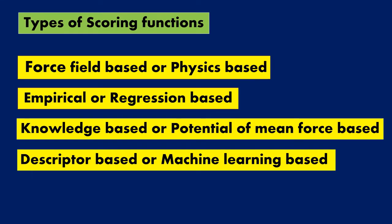Now coming to the different types of scoring functions. Generally in literature, we see that there are only three different types of scoring functions mentioned. But in the paper which I have read, an additional scoring function is also mentioned. So I have taken four different types based on that reference material: the first is force field based or physics based method; second, empirical or regression based; third, knowledge based or potential of mean force based; and the fourth is descriptor based or machine learning based.